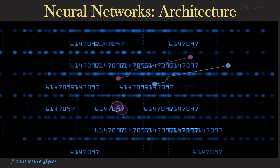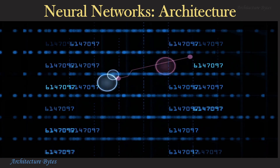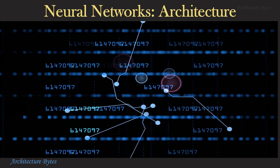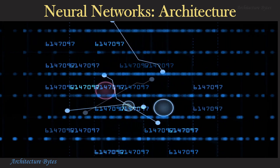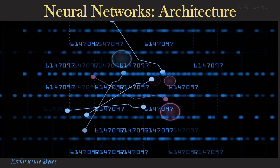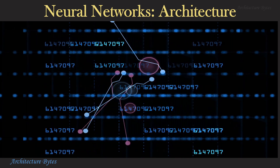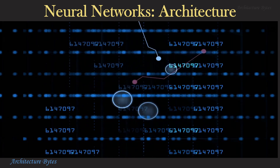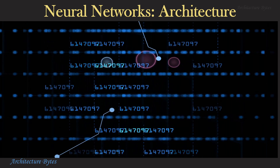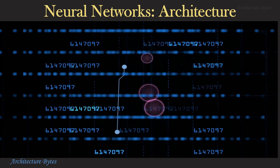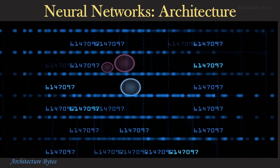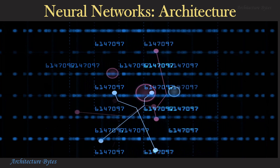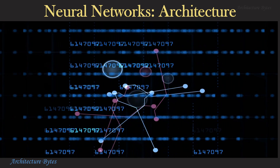The architecture of a neural network is essentially how neurons are connected to one another. A neural network is a machine learning model made up of small mathematical functions called neurons. Just like neurons in a human brain, they are the lowest level of computation in the network.